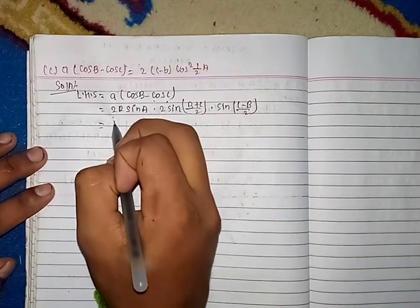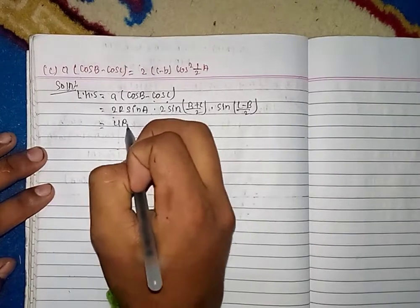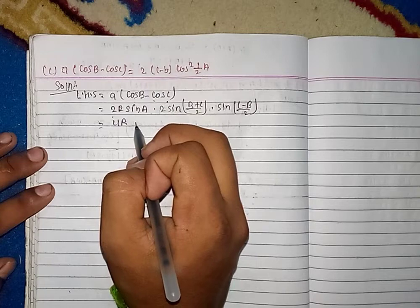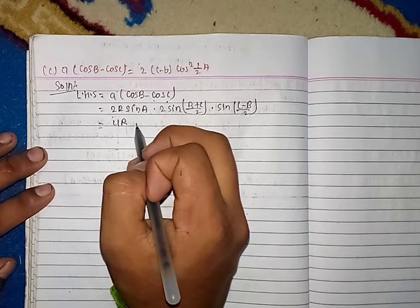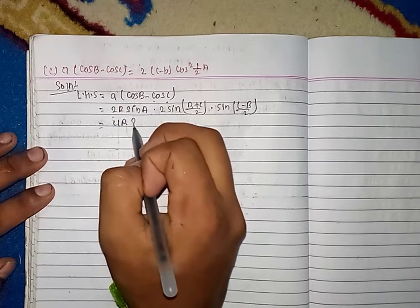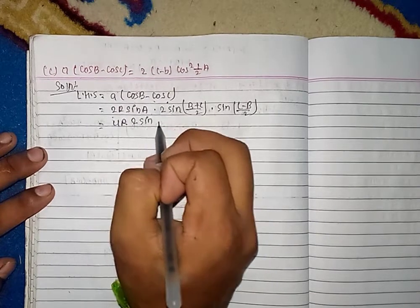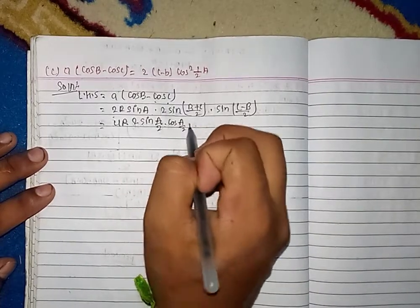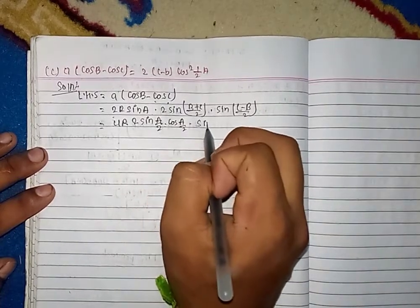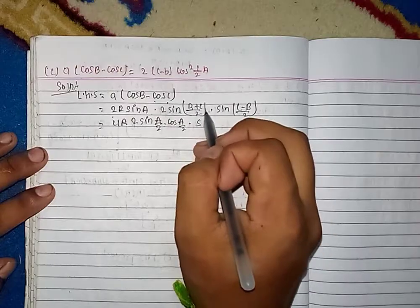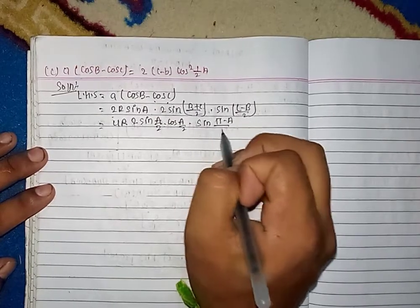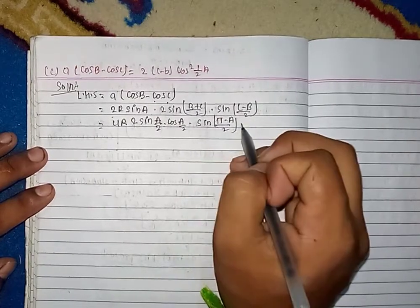So this is 4R. We have 4R. We have 2·sin(A/2)·cos(A/2)·sin(B+C). We have π−A. So we have π−A and sin(C−B). We have a skip.